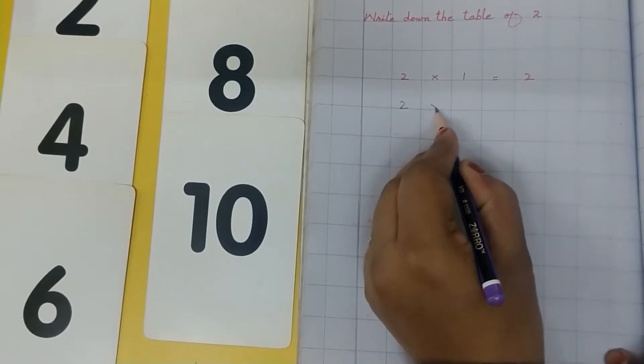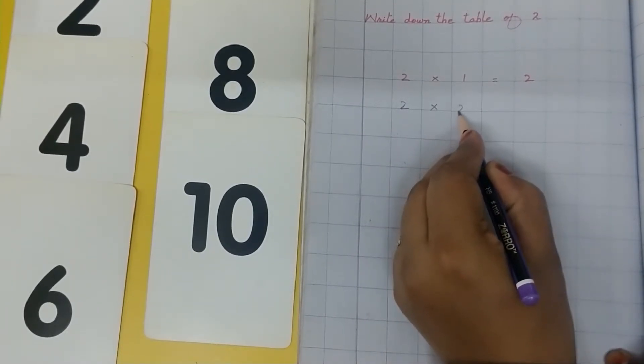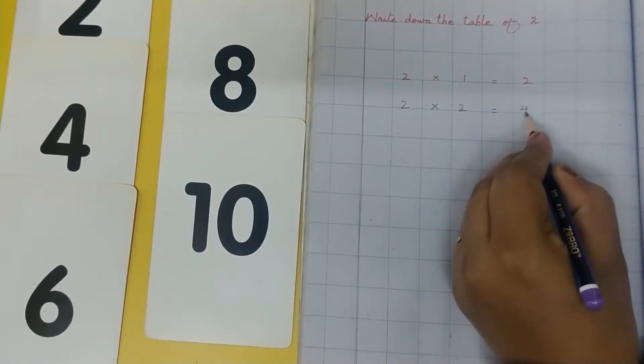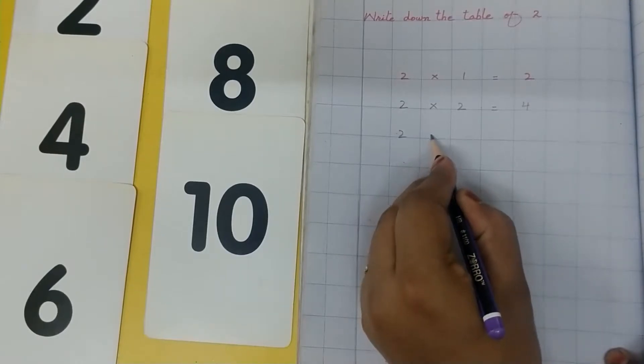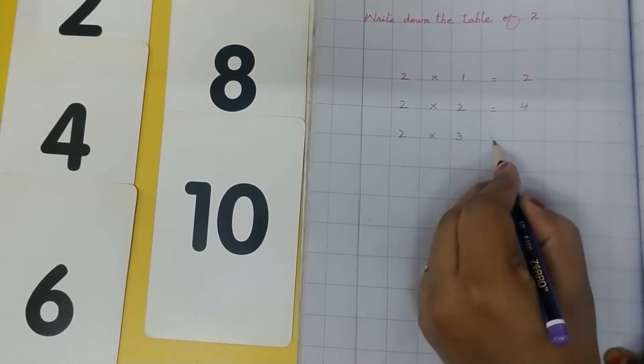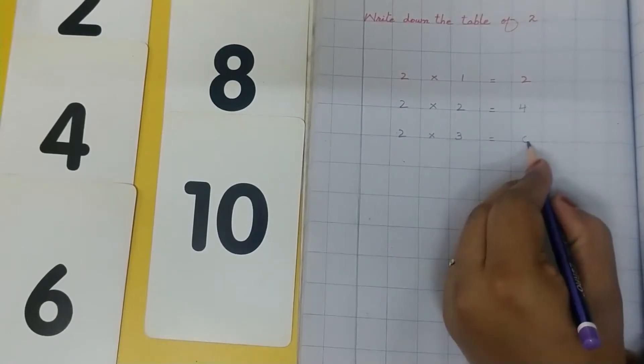2 multiplied by 2 is equal to 4. 2 multiplied by 3 is equal to 6.